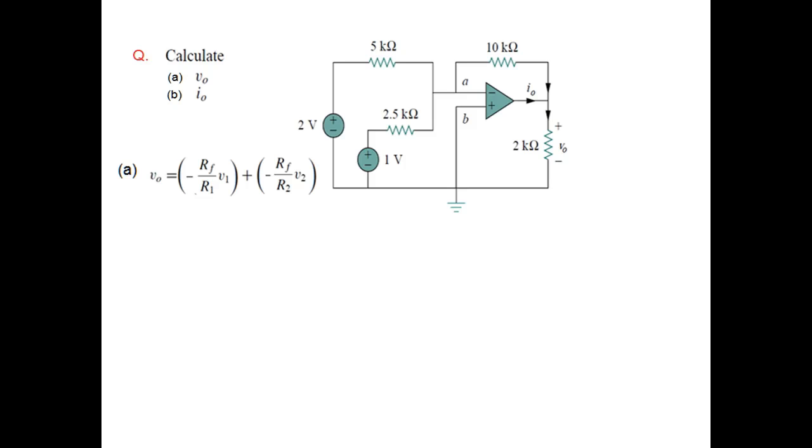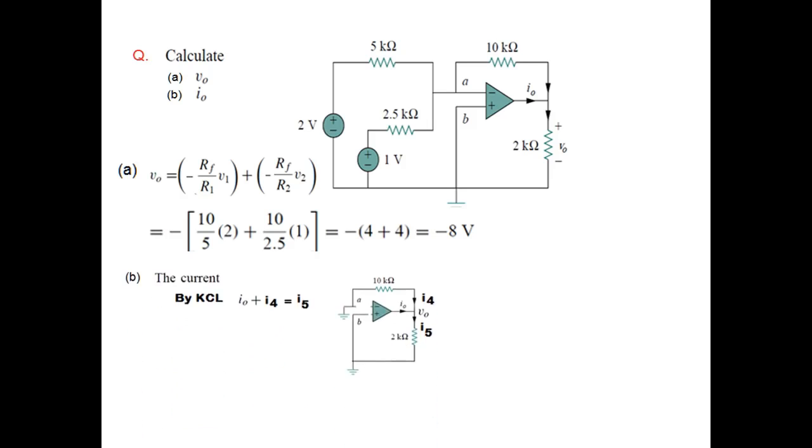We put the values to find V0, and V0 can be found to be negative 8 volts. So this is the first part.